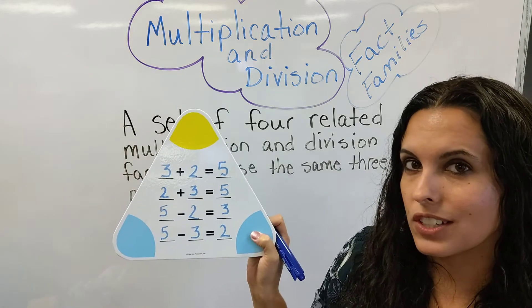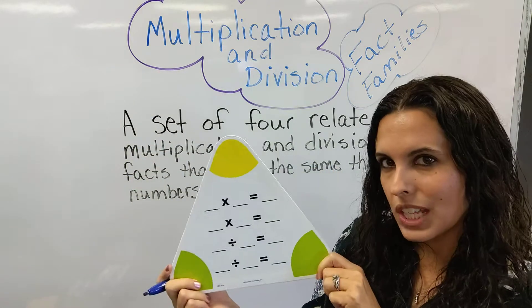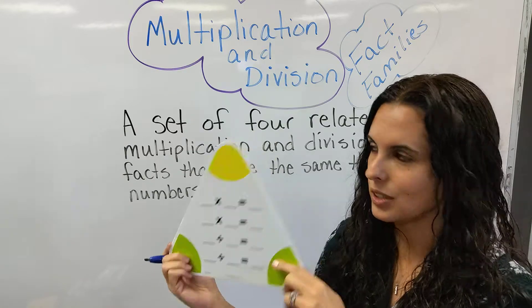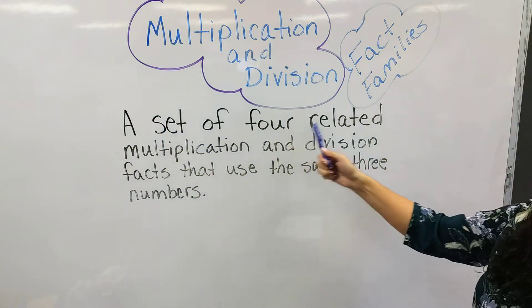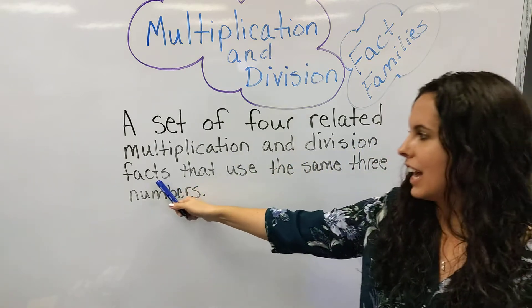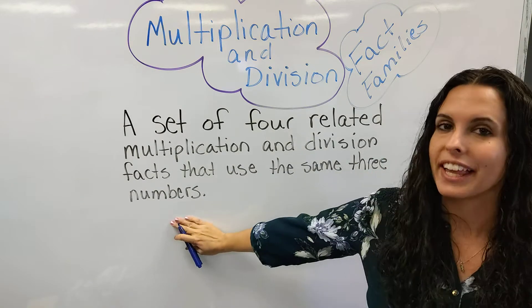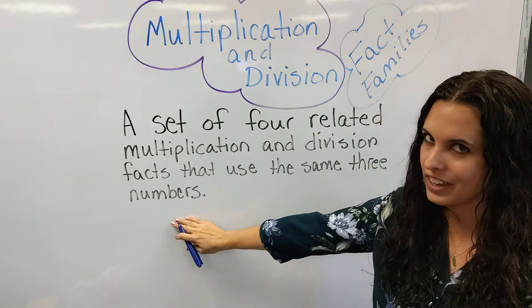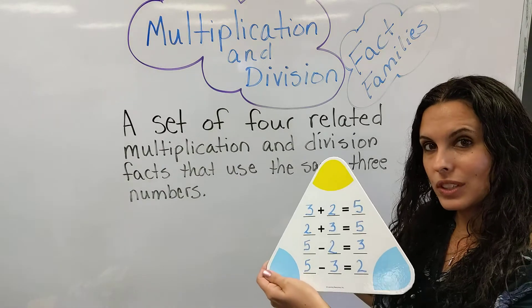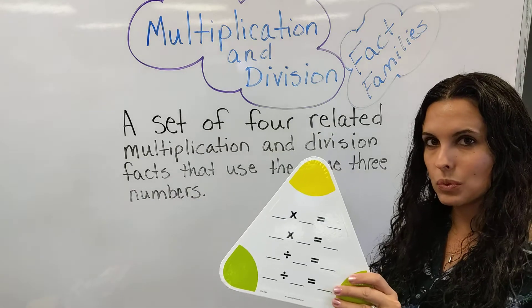So that's your review of addition and subtraction fact families. So how can I use that information to do multiplication and division? Well, a set of 4 related multiplication and division facts that use the same 3 numbers is your definition of a fact family. So we're going to use the same 3 numbers just like when we're doing the addition and subtraction fact family. Multiplication and division will be the same.